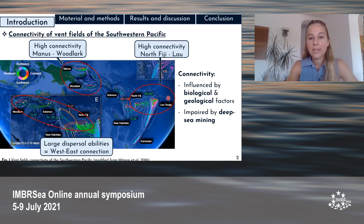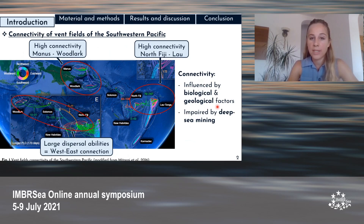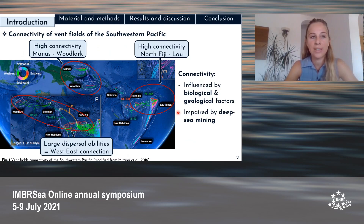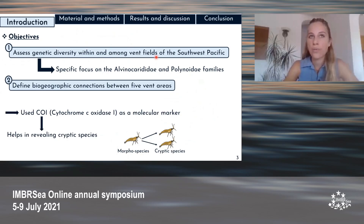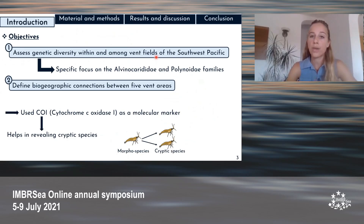However, connectivity might still be impaired by deep-sea mining activities, and this will be impaired even more in the southwest Pacific due to the high concentration of polymetallic sulfide deposits. In this framework, the objectives of this study were first to assess the genetic diversity within and among vent fields of the southwestern Pacific. Defining genetic diversity will allow inferring the evolutionary and demographic histories of the community, and the results will represent a reference of the ecosystem state prior to any mining impact.